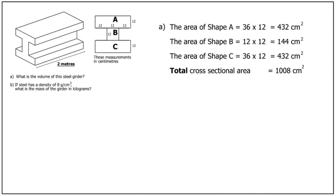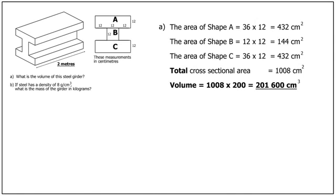Before we go on to find the volume of the girder, there's one thing we should notice: the length is given in metres whereas all the other measurements were given in centimetres — something you must always watch out for in this type of GCSE question. So we write the length as 200 centimetres, not 2. The volume is therefore 1008 multiplied by 200, which is 201,600 cubic centimetres. So that's Part A dealt with.